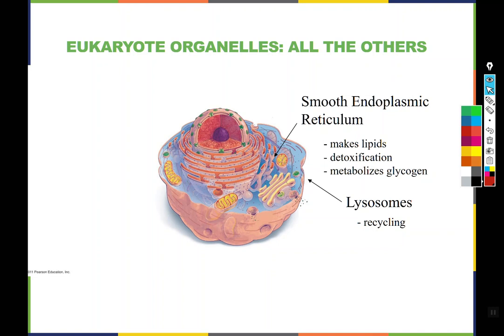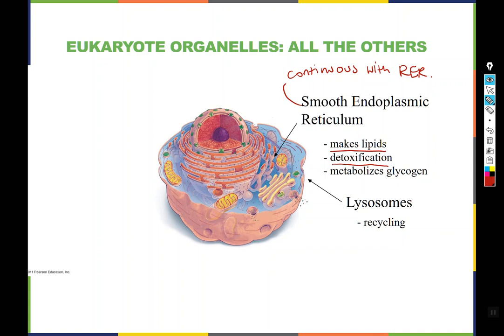The smooth endoplasmic reticulum is continuous with the rough endoplasmic reticulum, but it doesn't have the same job. Although the membranes are continuous, this one makes lipids, provides detoxification via the enzymes inside of it, and metabolizes glycogen. For example, your liver — which is responsible for making bile, detoxifying toxins, and metabolizing glycogen — has a lot of smooth ER in its cells. If you were to look at a hepatocyte, you would find way more smooth ER than in another cell type. This is an example of how cells can specialize by changing the relative amount of organelles they have to suit their particular job.